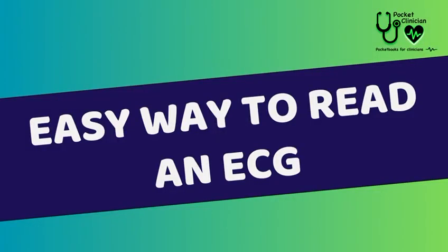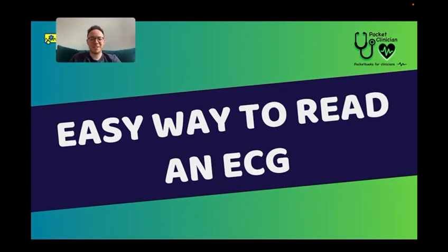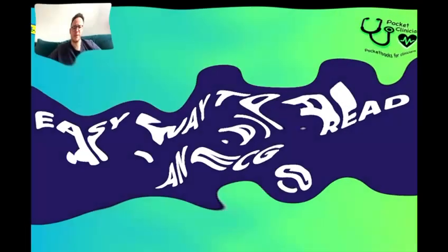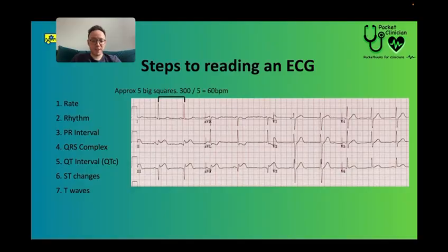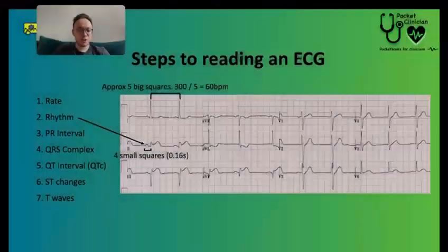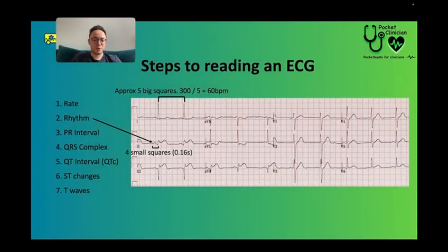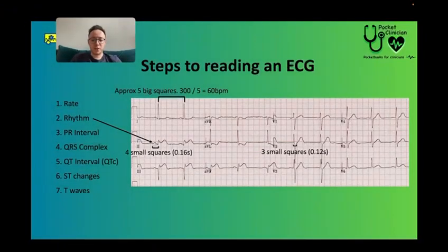Easy ways to read an ECG. I'm going to tell you an easy way to read an ECG, because when we go to university, we always hear about the ten rules of reading an ECG. It's way overcomplicated trying to learn all the different rules of all the different leads. First, I'm going to work out the rate. Then we're going to look at the rhythm — so we go to lead two. We're then going to look at the PR interval, which is the start of the P wave to the start of the QRS complex. We're then going to look at the QRS width.